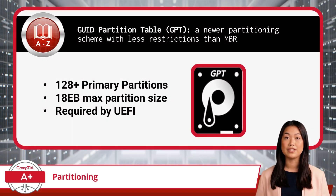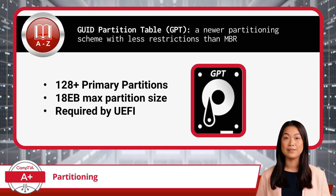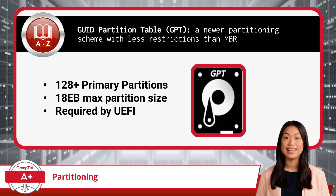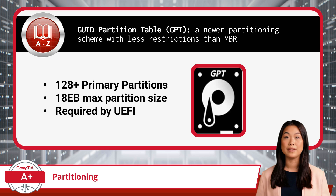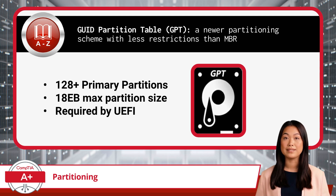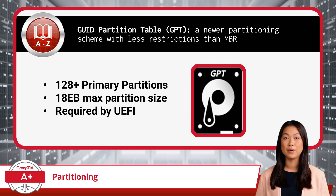On the other hand, GUID Partition Table, or GPT, is the modern replacement for MBR, offering several advantages. A GPT partitioning scheme supports an almost unlimited number of partitions, but most operating systems impose a practical limit of 128. Each partition can be up to 18 exabytes in size, which is astronomically larger than the two-terabyte limit of MBR. Therefore, GPT is ideal for modern drives larger than 2 terabytes and systems requiring more than four partitions. Additionally, systems using UEFI, rather than the older BIOS, will require GPT.